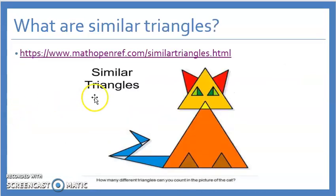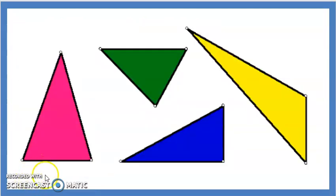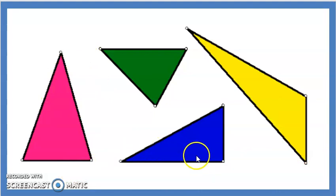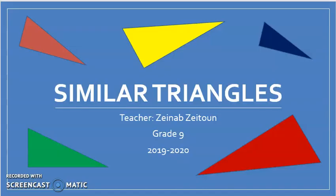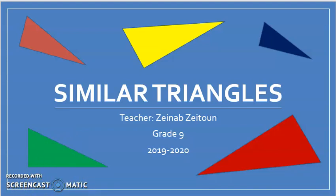First, what are similar triangles? Let's try to discover them together. Look at these triangles — is there anything special about them? You can see that this might be a solid triangle, this might be a right triangle, this is an acute triangle, and this is an obtuse triangle. But is there anything in common between them other than being a triangle? Look at these triangles again. Is there anything in common between them?